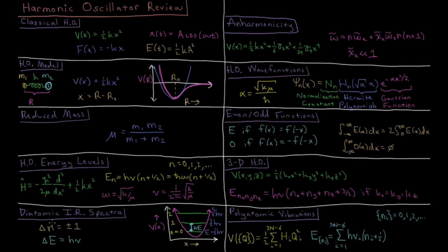Our selection rule for infrared spectra, for vibrational spectra, is that the change in our vibrational quantum number n is going to be plus or minus one. Plus one for absorption of a photon, minus one for emission of a photon.